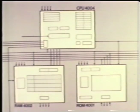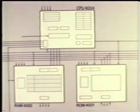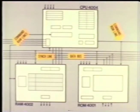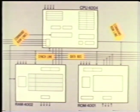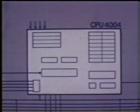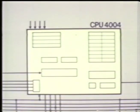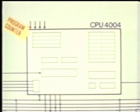Let's see how the MCS-4 is organized. The CPU is connected to the RAM and ROM memories by a four-line data bus. The data bus allows parallel 4-bit data transfer between the devices. A sync line carries the system's timing signal generated by the CPU. Command lines send control signals to the RAMs and ROMs. The CPU controls the system — it fetches and executes instructions stored in ROMs.